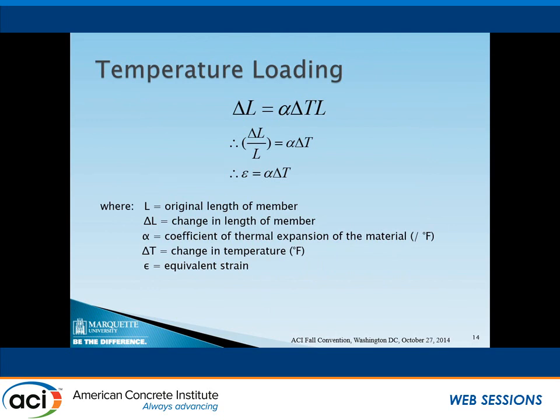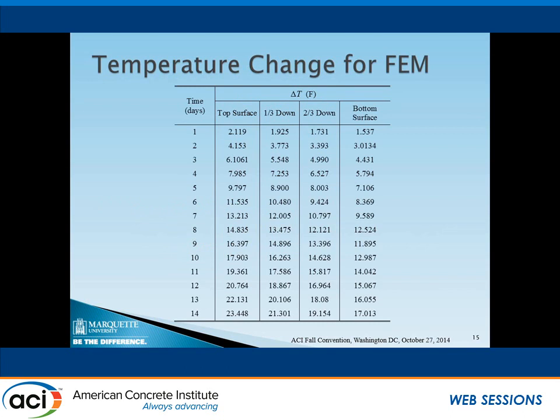It would be nice if we could apply shrinkage directly to the finite element model; however, ANSYS cannot accept that loading type, but it can accept temperature loading. So we use the equation: instead of applying shrinkage directly, we apply an equivalent temperature change. If we select a reasonable thermal expansion coefficient alpha and the corresponding delta T, we can achieve the target shrinkage in the model. Based on the shrinkage values, we find the delta T to apply for each day at each location, and we run the model for each day from day one to day 14.